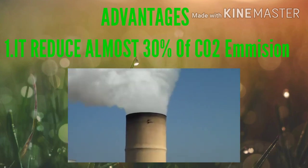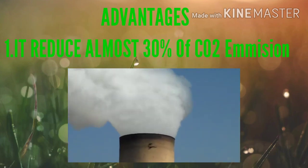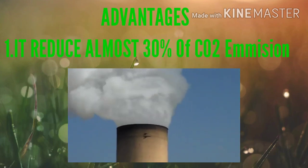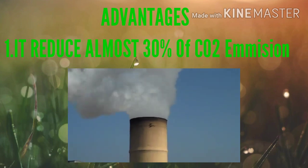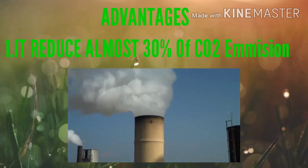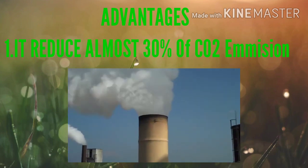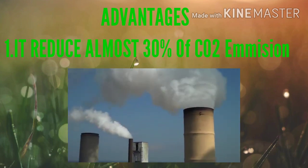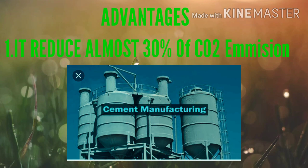What are the advantages of using green concrete? The first advantage is that it reduces almost 30% of CO2 emission. We know that during cement production, 1 kg of cement emits 900 g of CO2. That is why we replace cement with fly ash, and CO2 emission is reduced by 30%.